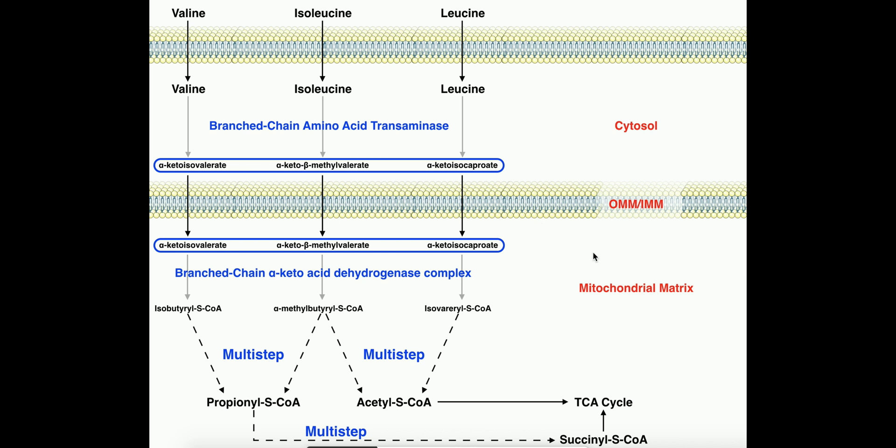Now remember, skeletal muscles have mitochondria. I've sort of simplified this. This membrane that's shown right here really represents the outer membrane of the mitochondria and its inner membrane. I just didn't want to put two membranes for the sake of space, but ultimately these alpha-keto acids have to be transported through the outer membrane, and then through the inner membrane, and ultimately into the mitochondrial matrix, which is where the majority of the catabolism is going to occur.